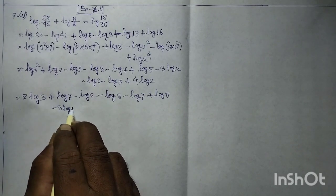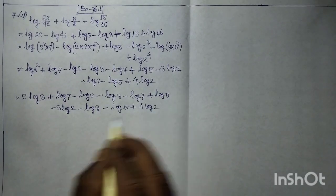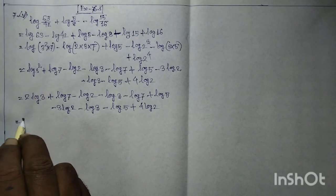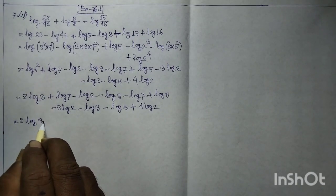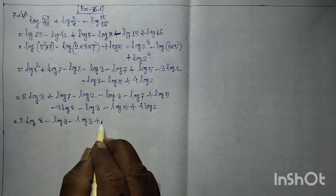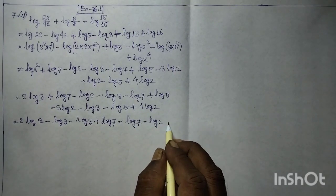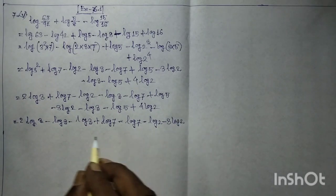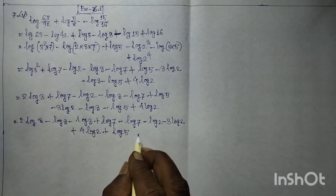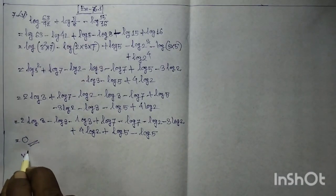Collecting terms: 2·log 3 minus log 3 minus log 3 plus log 7 minus log 7 minus log 2 minus 2·log 2 plus 4·log 2 plus log 5 minus log 5 is equal to zero. Question 76.